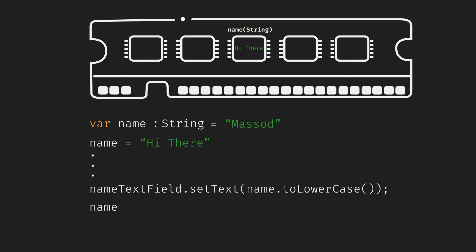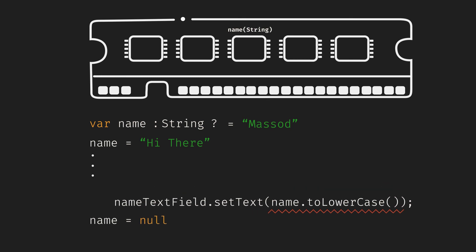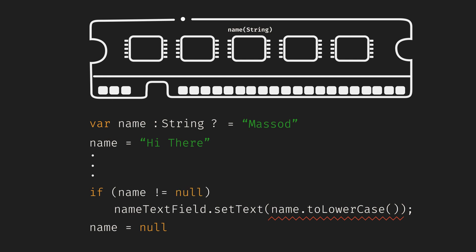But what if for some good reason we want to assign a null value at some point? Then we have to explicitly declare name as nullable with a question mark in front of its type. Then we will be able to assign null values, but every time we try to use name, the compiler will prevent us at compile time — unless we check for null explicitly. So it helps us prevent null pointer exceptions at compile time, decreasing the surprises at runtime.